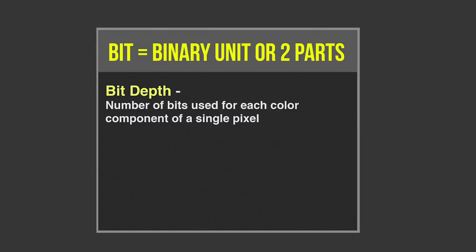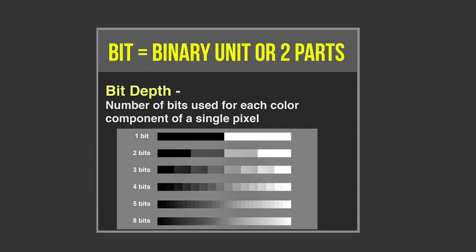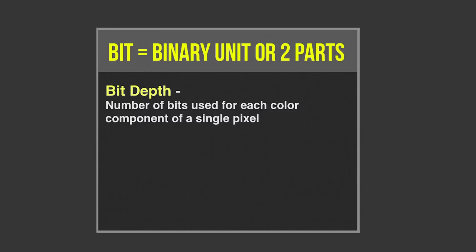First, let's talk about bit depth. What is a bit? A bit is a binary unit. In computer language, it's either a zero or a one — it's an arbitrary unit of value. So if you have a one-bit file, that means it's either a zero or a one. It's black or white. It's a yes or a no. In order for a computer to get more information, more binary units are added to certain values.